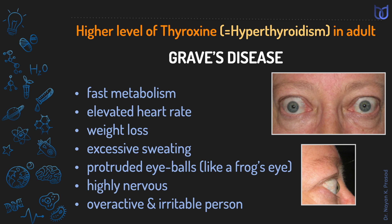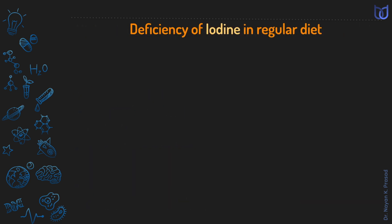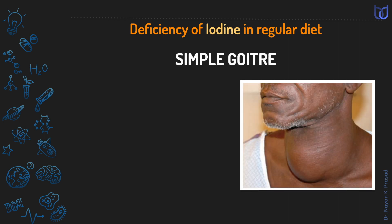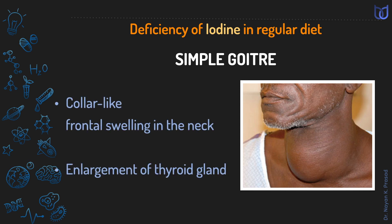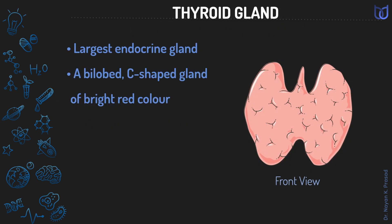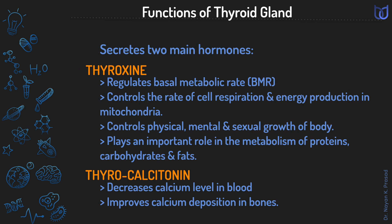Production of thyroxine hormone needs iodine. Hence, deficiency of iodine in the regular diet causes simple goiter — a disease characterized by collar-like frontal swelling in the neck due to enlargement of the thyroid gland itself. To summarize, the thyroid gland is the largest endocrine gland, producing two hormones: thyroxine, related to energy level, and thyrocalcitonin, concerned with calcium level in blood.